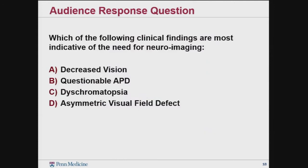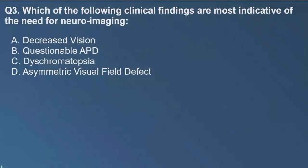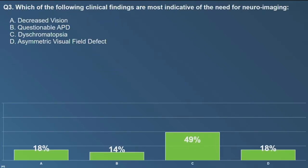I'll repeat the audience response question to confirm progress: which of the following clinical findings are most indicative of the need for neuroimaging — decreased vision, a questionable APD, dyschromatopsia, or an asymmetric visual field defect? It looks like there's a great learning curve. I really do rely on those color plates, especially in my glaucoma clinic with normal tension glaucoma patients. All my technicians know I need them to test it and identify whether patients are slow in their responses. You would not have been wrong to pick decreased vision, but it's not as sensitive as color plates for optic neuropathy.